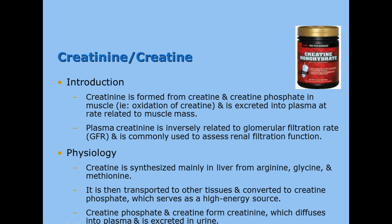Our next NPNs are creatinine and creatine — they are not to be confused. While creatinine is formed from creatine and creatine phosphate in the muscle, they are not the same. Creatine is an energy source for the muscles, and the waste product of that, when combined with creatine phosphate, becomes creatinine. Plasma creatinine is inversely related to glomerular filtration rate — if you have a high creatinine in your bloodstream, it means your kidneys are not working well. Creatinine is actually a better test for glomerular filtration rate than urea.